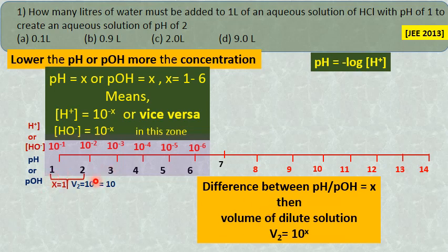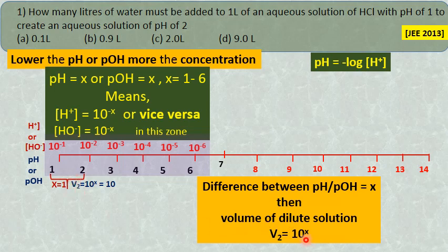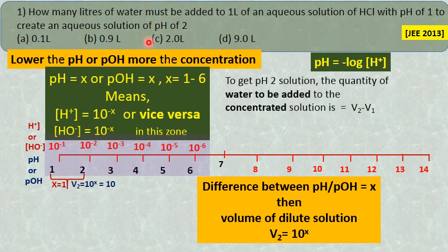If the difference between the two pH values is 1, then the net volume of the dilute solution — let it be V2 — is equal to 10 raise to x, where x is the difference between the two pH values. Difference between pH 2 and pH 1 is 1. So the net volume of the dilute solution is equal to 10 raise to 1, which is equal to 10 liters. So the volume of the pH 2 solution is 10 liters.